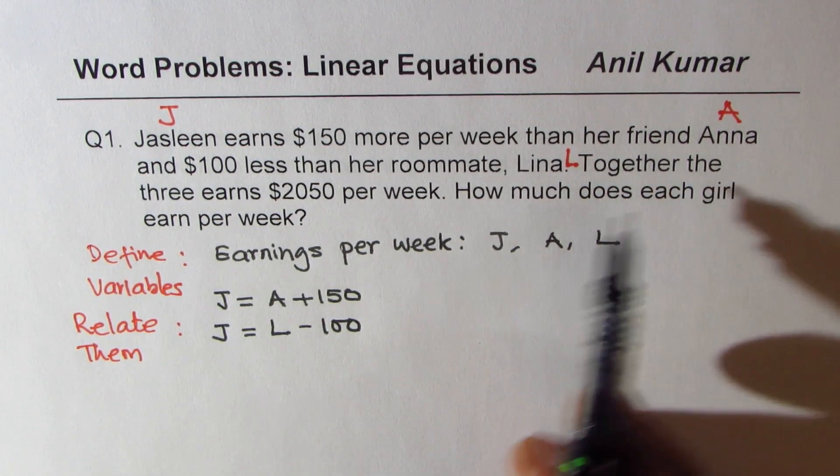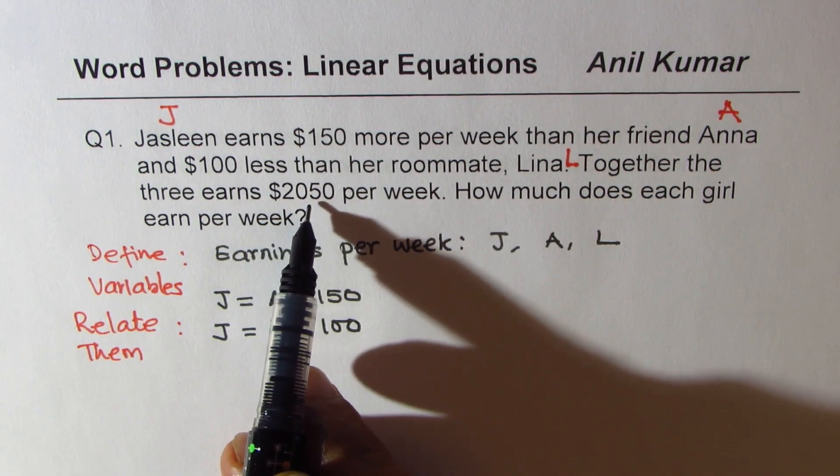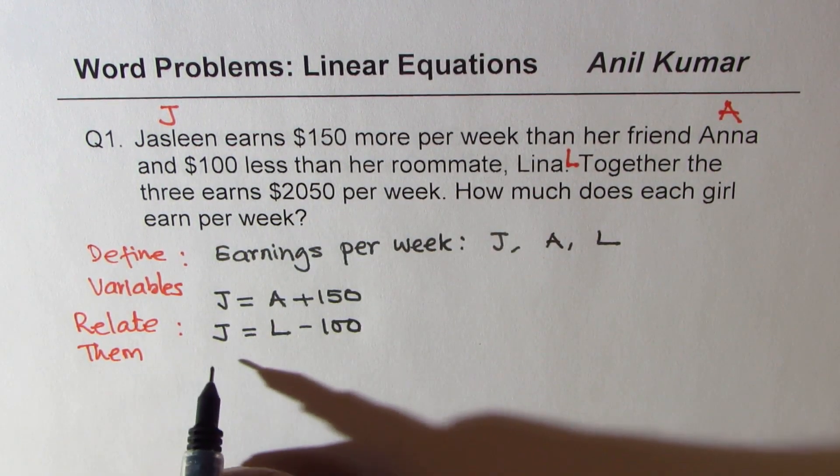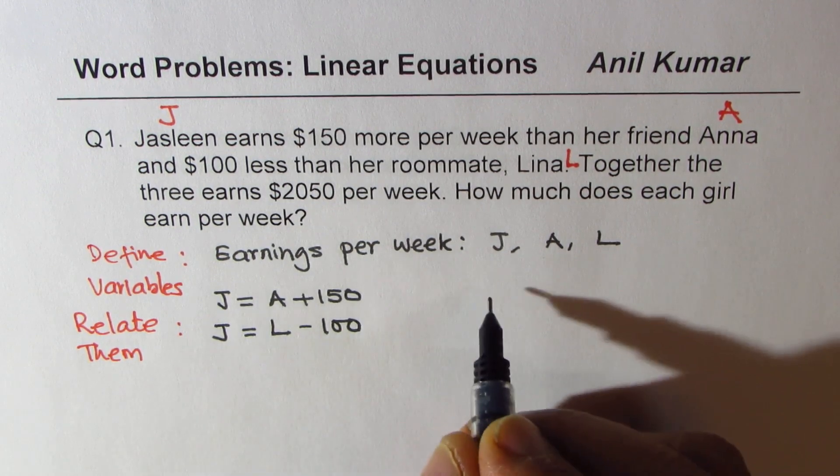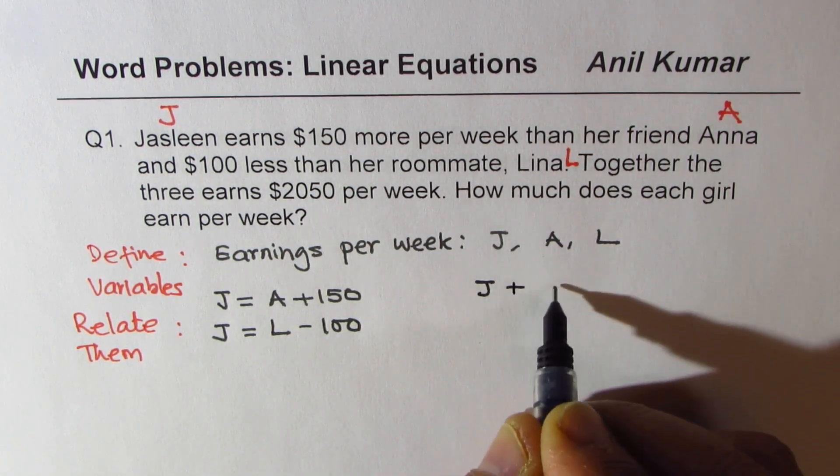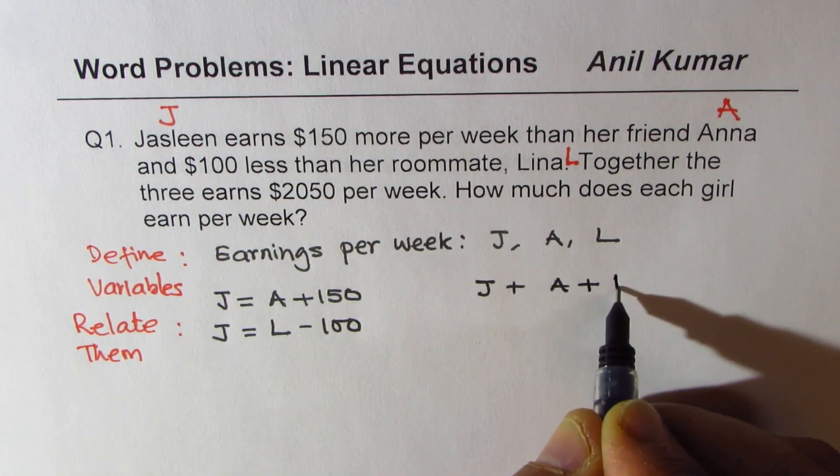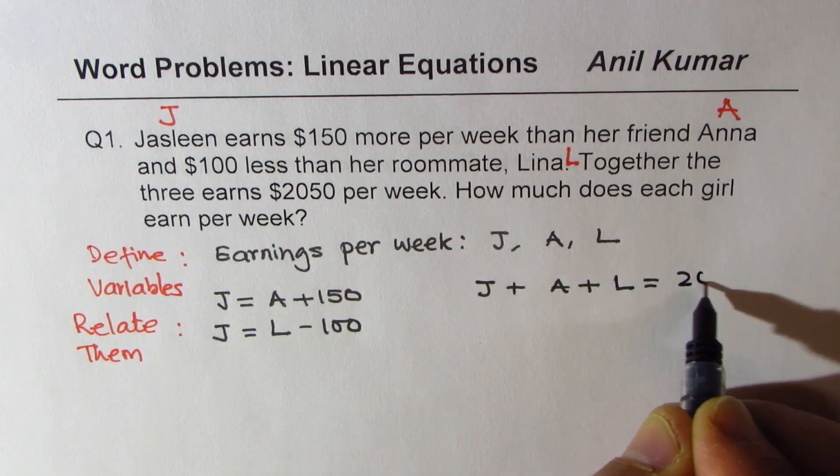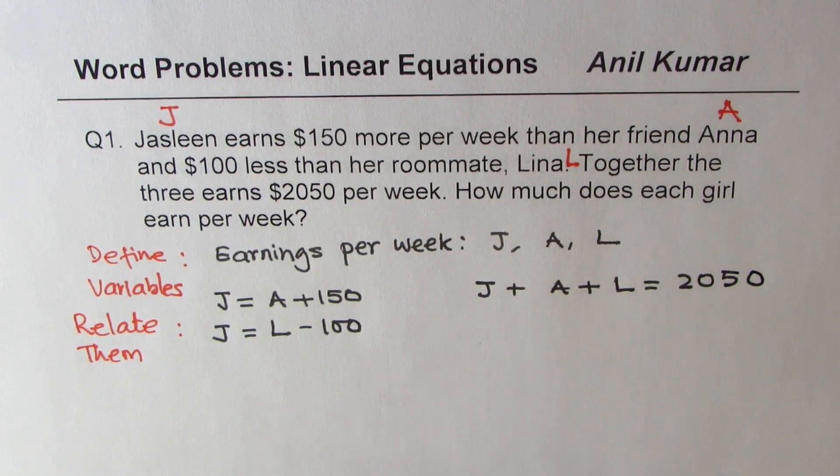Together the three earn $2050 per week. So what we have here is J plus A plus L equals $2050. Is that clear?